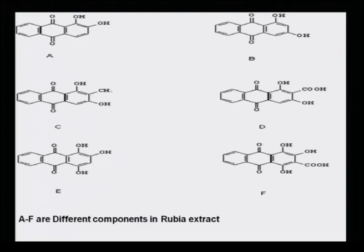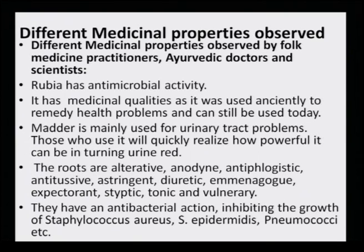One structure has ortho-hydroxy, another has meta-hydroxy, the third has meta-hydroxy with a methyl group, the fourth has meta-hydroxy with a carboxylic acid at the ortho position, the fifth has three hydroxy groups (two para, one ortho), and the sixth has three hydroxy and one carboxylic group. All these functionalities make them different moieties altogether, and because of these structural differences, the medicinal properties also vary.